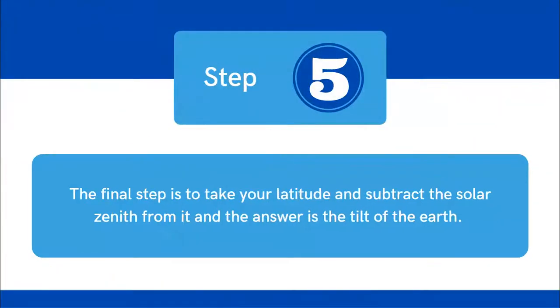Step five. The final step is to take your latitude and subtract the solar zenith from it and the answer is the tilt of the earth.